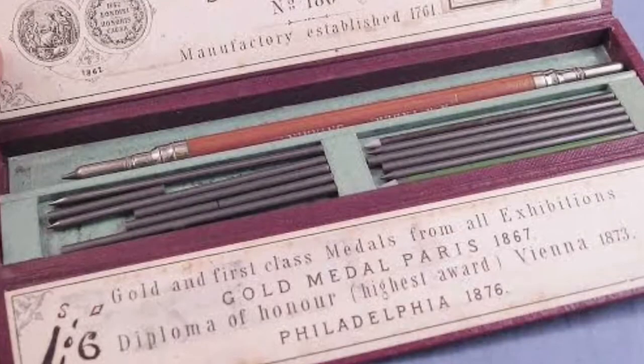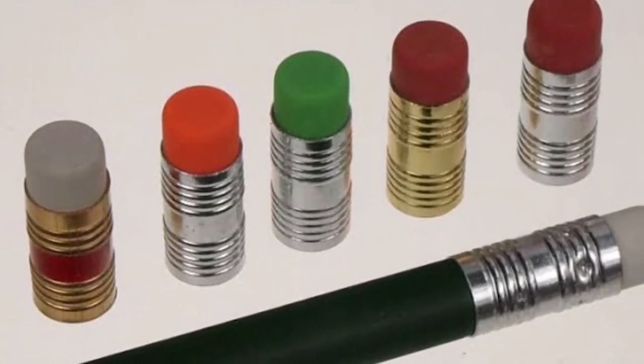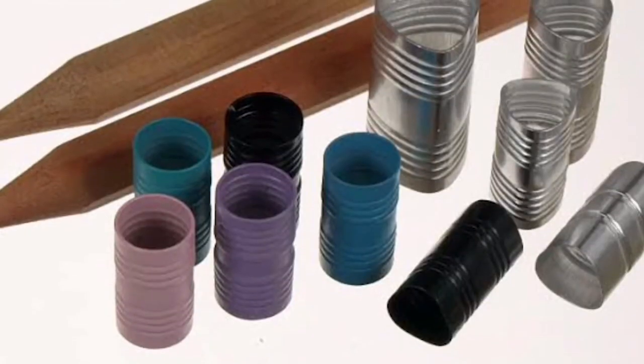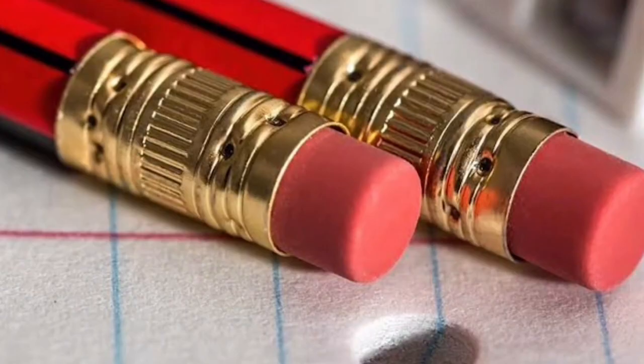1858 gets even cooler. Pencils and erasers. Yep, pencils with erasers on their ends. Mind blown, right? Hyman Lipman snagged the first patent, sold it for a sweet $100,000. Then drama ensues with a lawsuit against Faber-Castell. Classic.